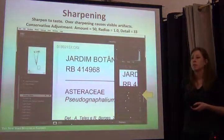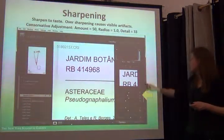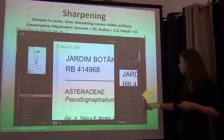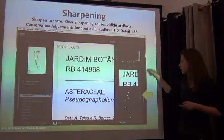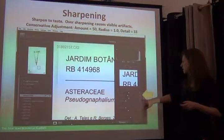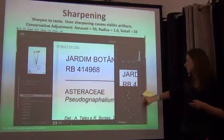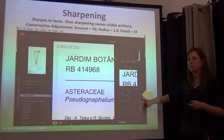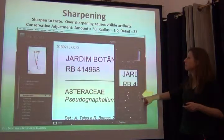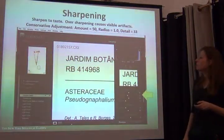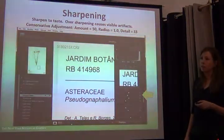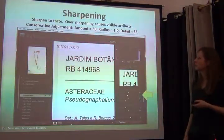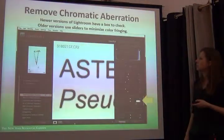Then we sharpen. Scrolling down the right-hand side, where you do all the changes, you find sharpening. Sharpening to an amount of 50, with a radius of 1 and a detail of 33, is a good bet — it'll be fine. Any more will cause artifacts in your pictures. Better to be conservative.